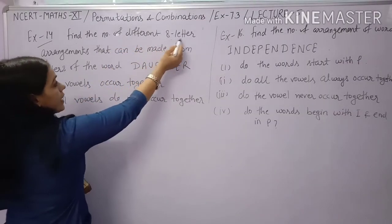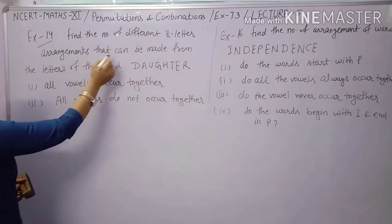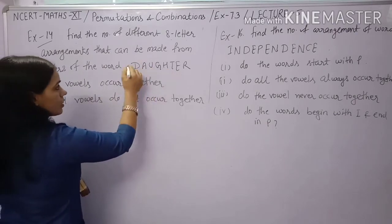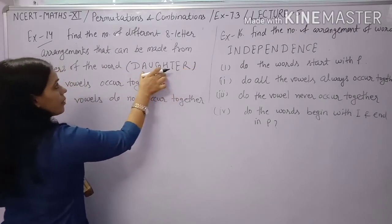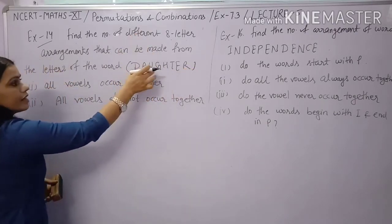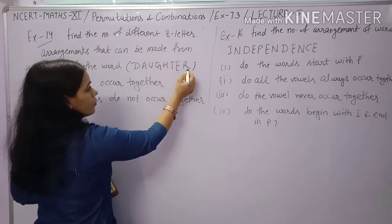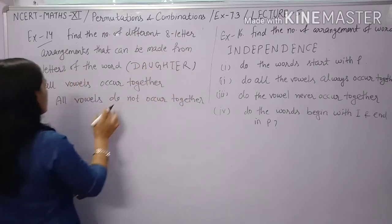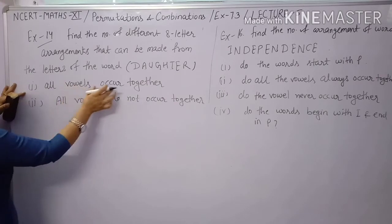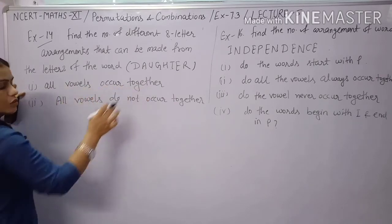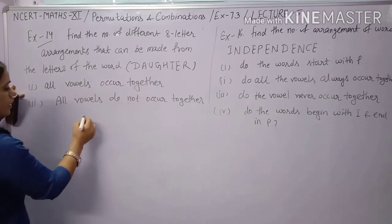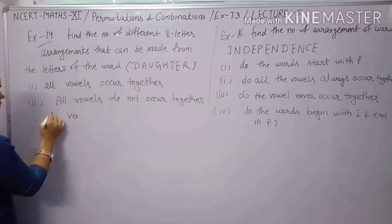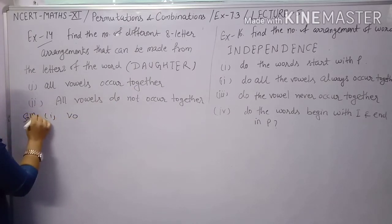Question 12: How many arrangements can be made from the letters of the word DAUGHTER? The word has 8 letters, all different. First condition: all vowels occur together.